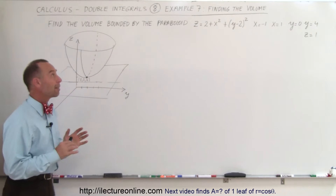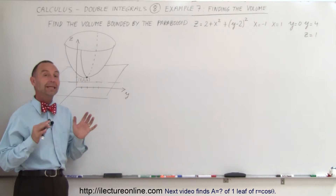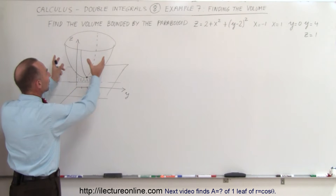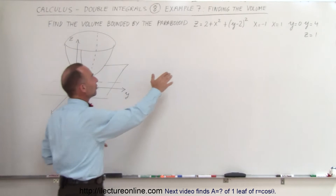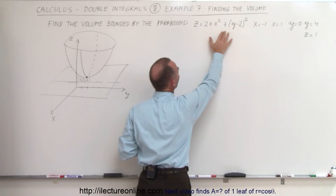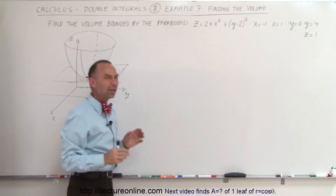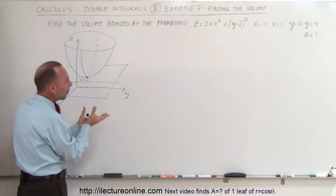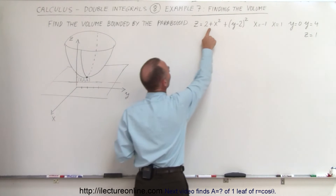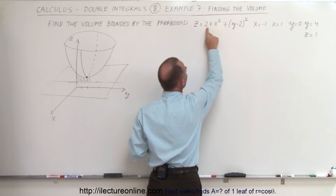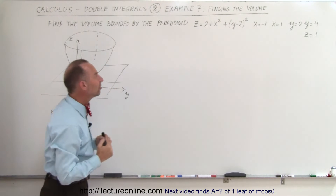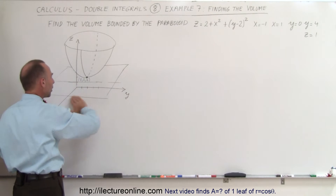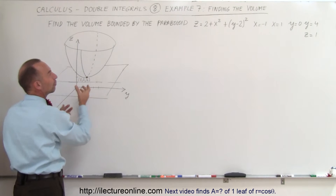Welcome to our lecture online. Our next example of how to find the volume using the double integral technique is the case where we have a paraboloid, defined by the equation z equals 2 plus x squared plus y minus 2 squared. The vertex is going to open upward because we have a plus x squared and a plus y squared, and it's going to be 2 above the xy plane.